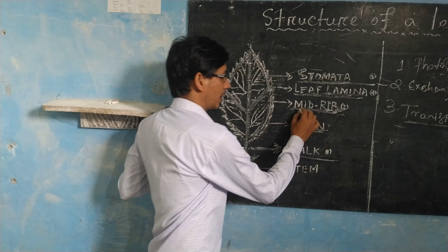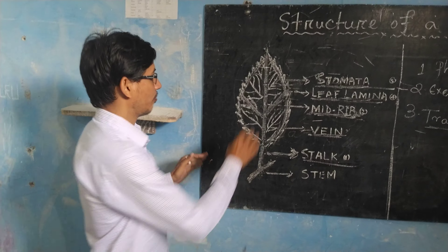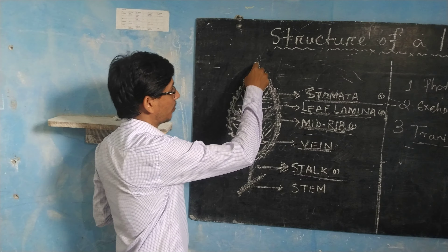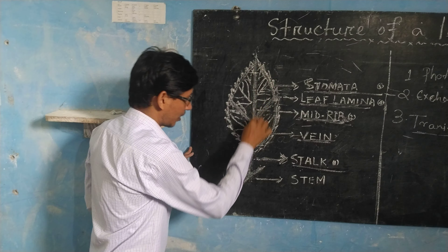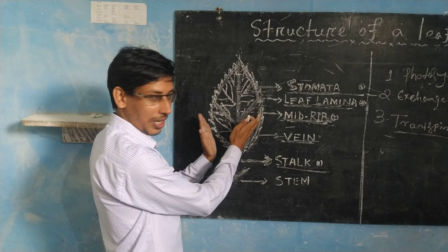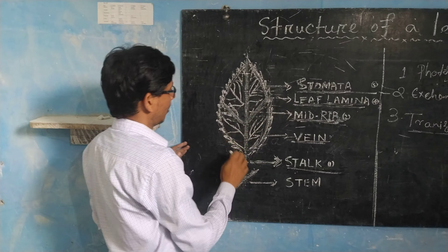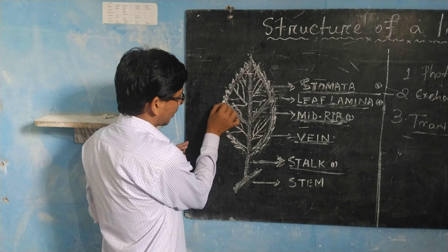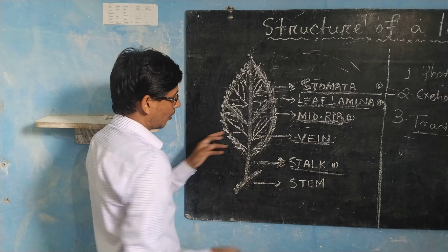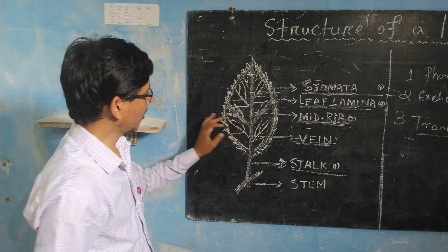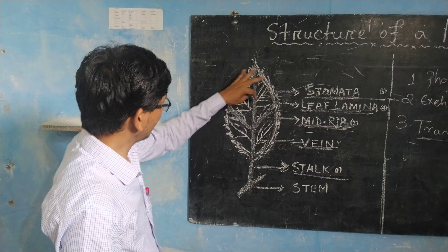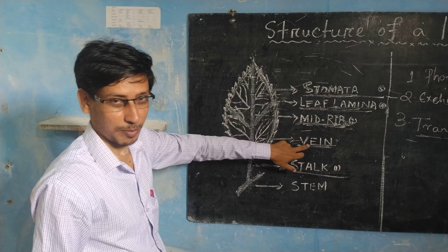The second part is the mid-rib, or the main vein. The mid-rib connects the base of the leaf to the tip of the leaf. The mid-rib is divided into two sides — the left side and the right side — and these are also called the side veins. The mid-rib carries water and minerals through the side veins to all parts of the leaf, giving the leaf its shape and support.